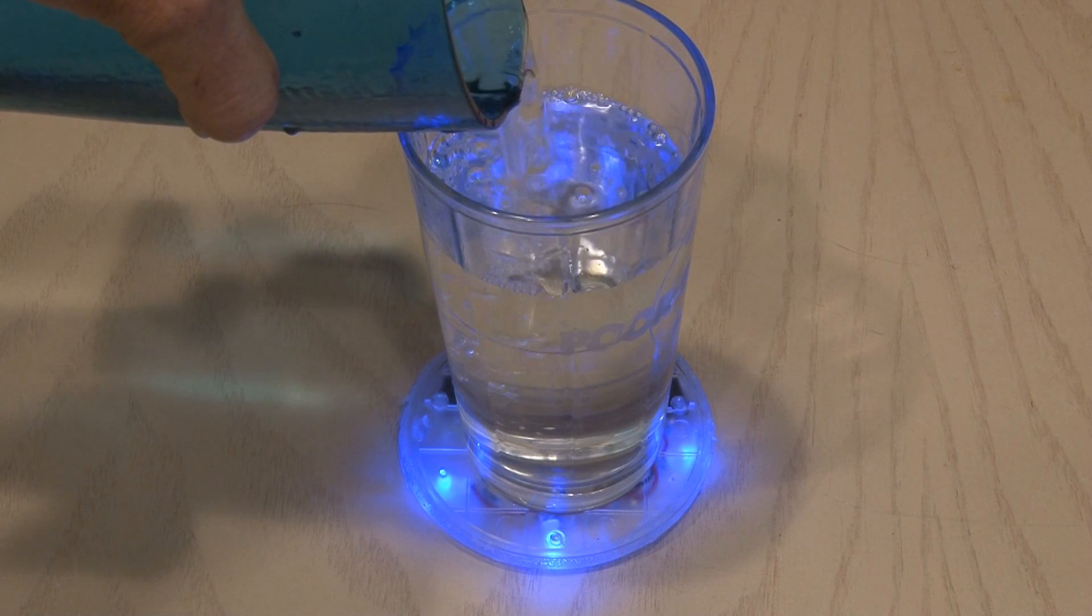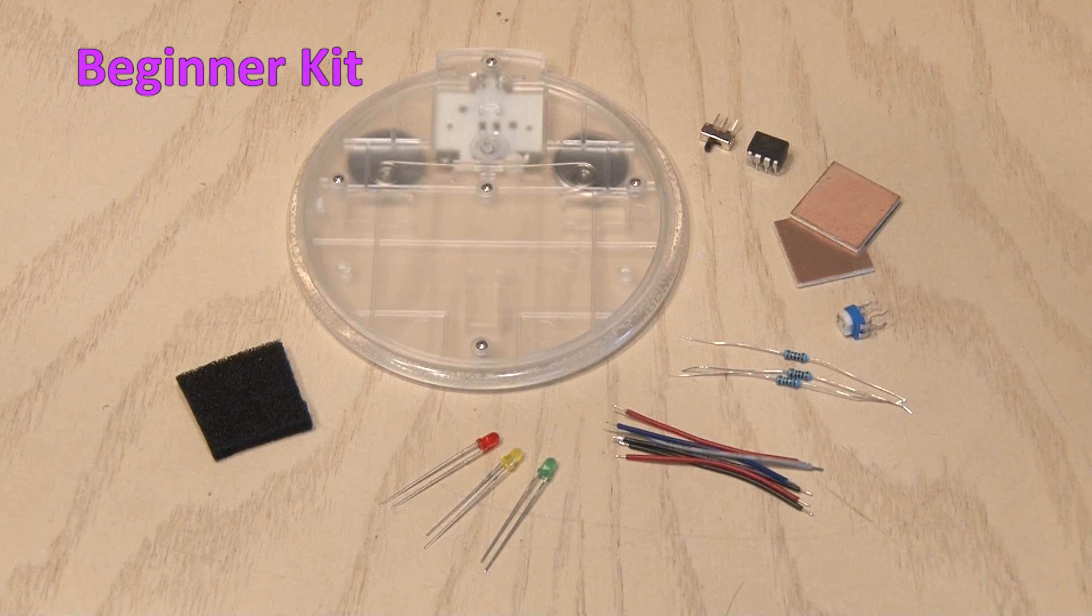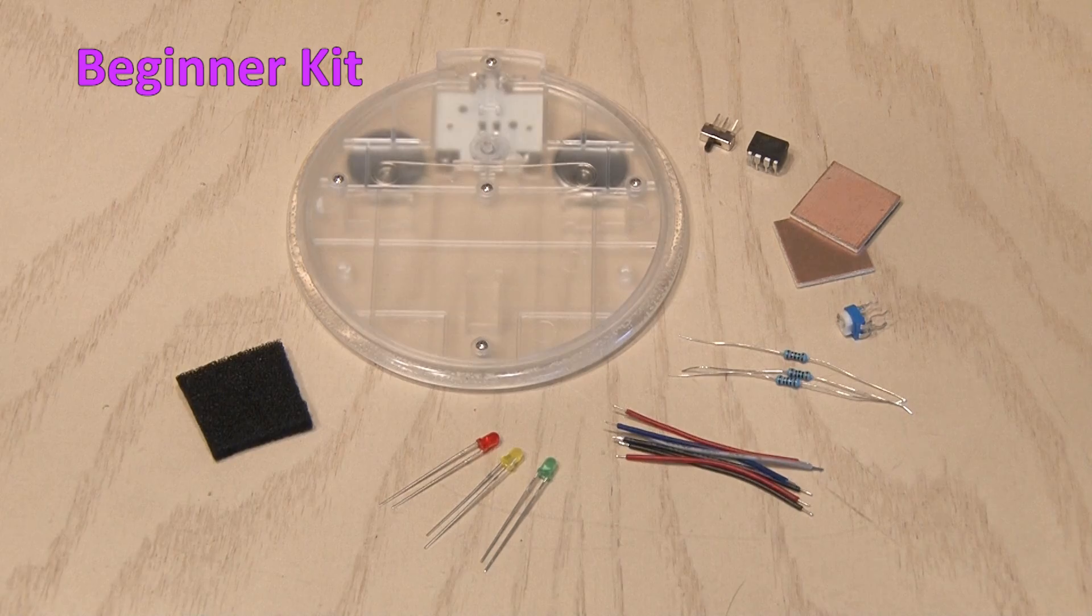Now it's time for you to build yours. The beginner kit comes with all the parts needed to make the kit and includes the AT45 chip and three colored LEDs. The coaster will light up with each of these three colors when a cup is placed on it.